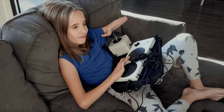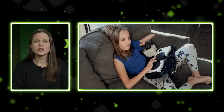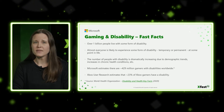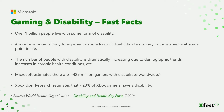But who is everyone, especially in the context of gaming and disability? Let me share a few fast facts to put it into perspective. There are over one billion people that live with some form of disability, and almost everyone is likely to experience some form of disability — temporary or permanent — at some point in their life. An example of a permanent disability could be a newfound need for reading glasses, while a temporary disability could include blurry vision after eye surgery or limited mobility after breaking your wrist.